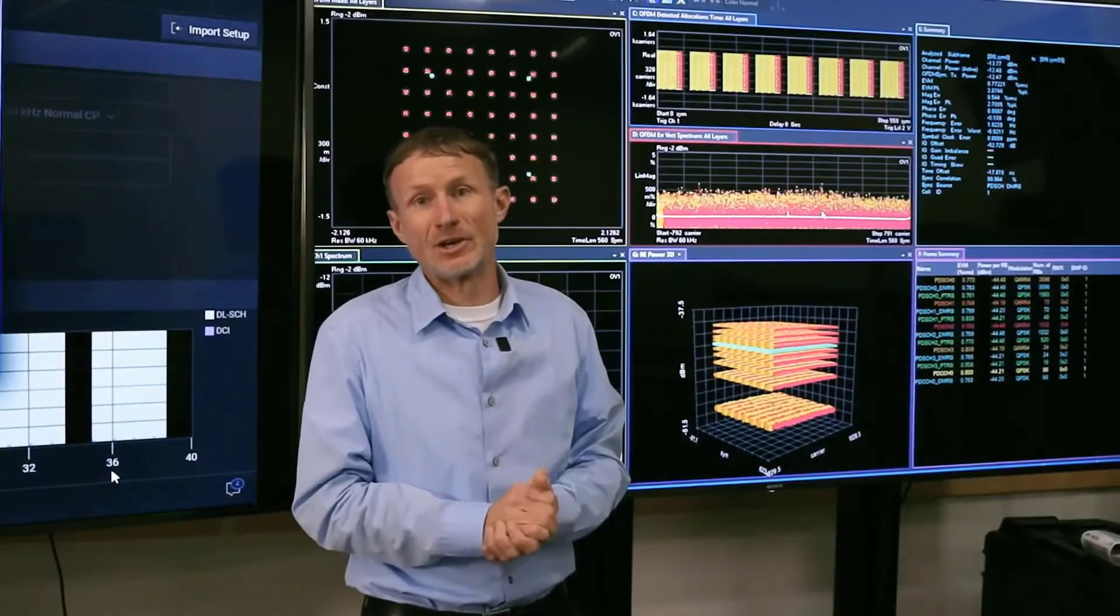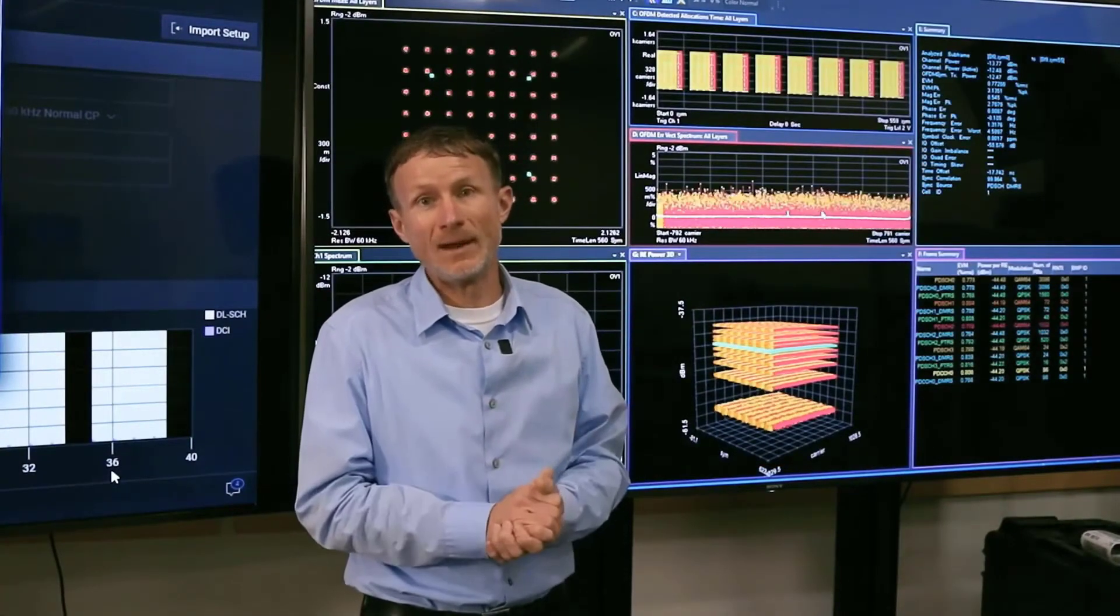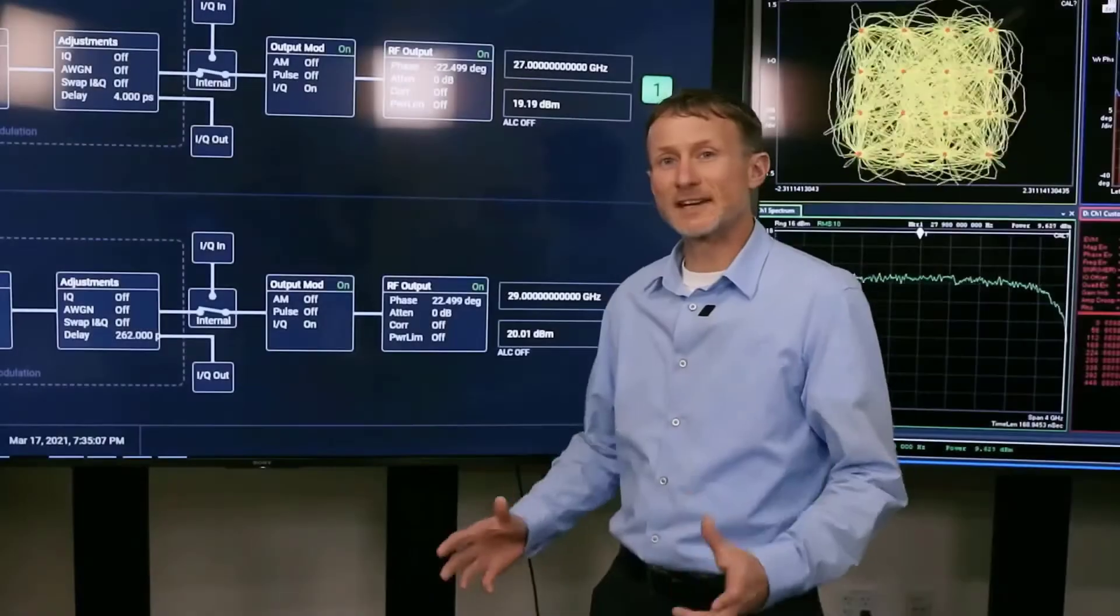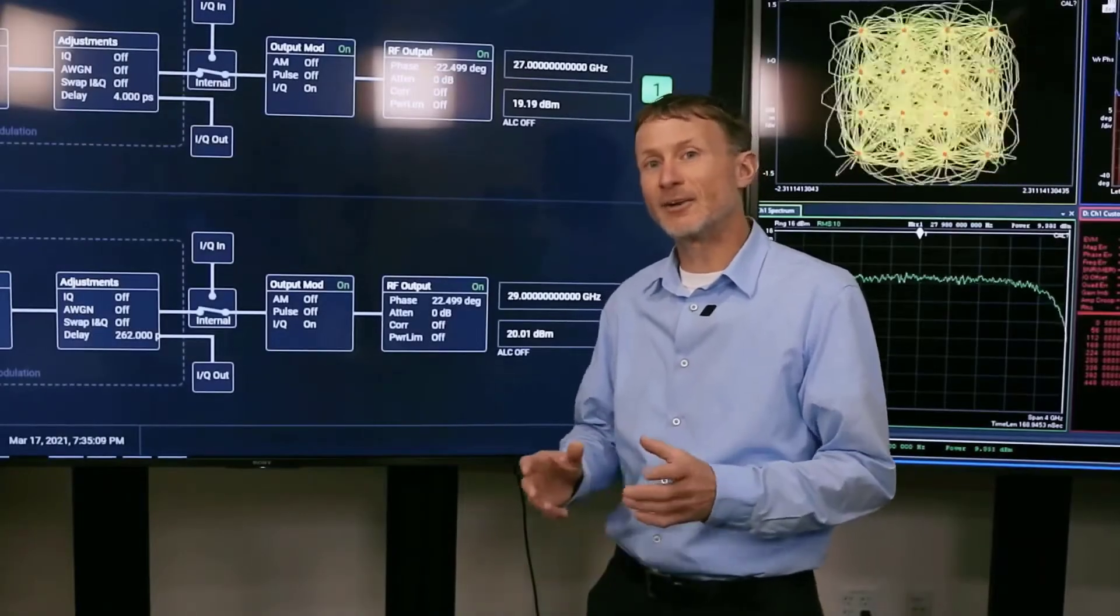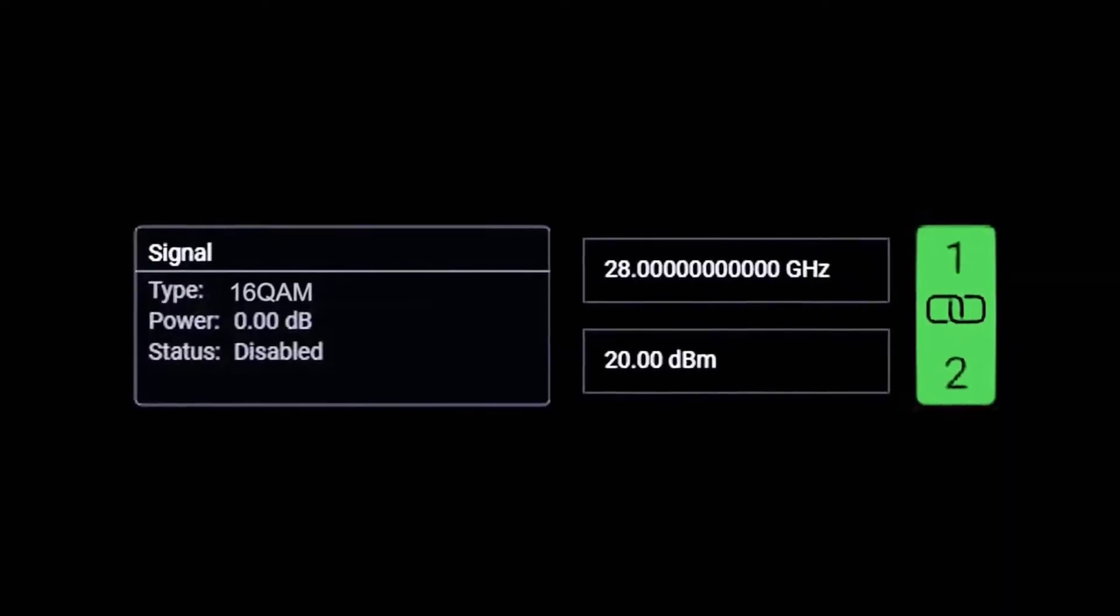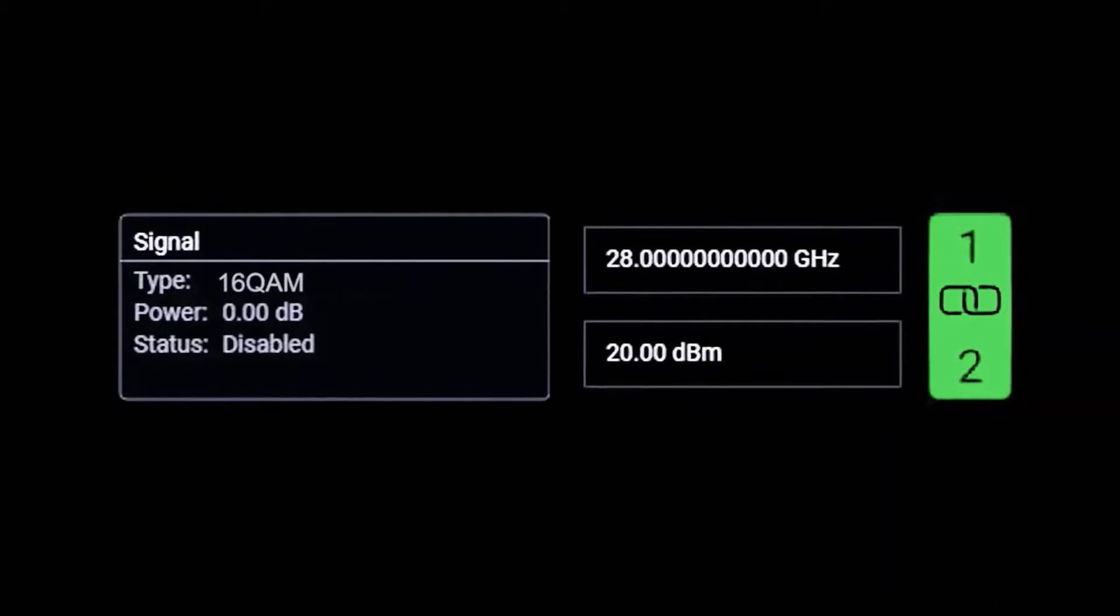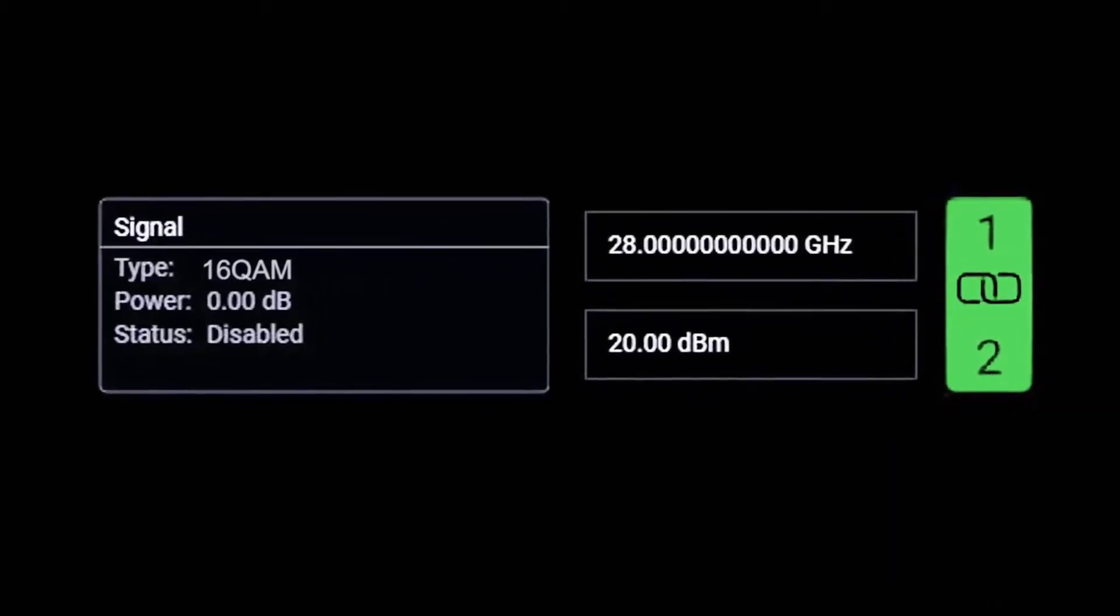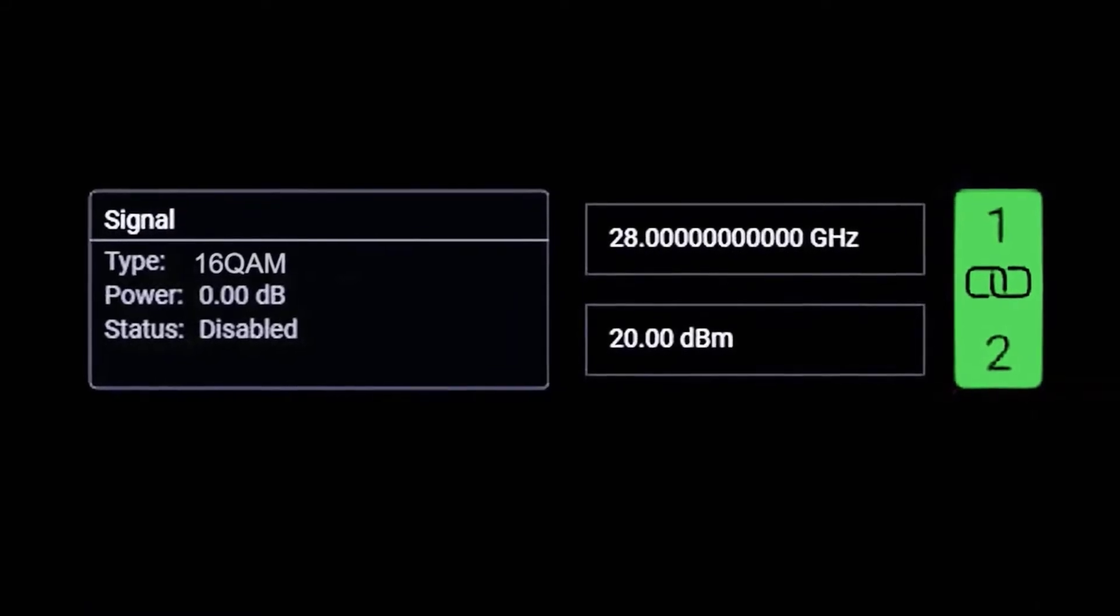In the next demo, I'm going to show you how we can make really wide bandwidth measurements using both the source and the analyzer. In this next measurement, I'm going to show you how we can generate and analyze up to 4 gigahertz of bandwidth. And I've set the generator here to 28 gigahertz again at a power level of plus 20 dBm, which is a phenomenally high power level at these frequencies.